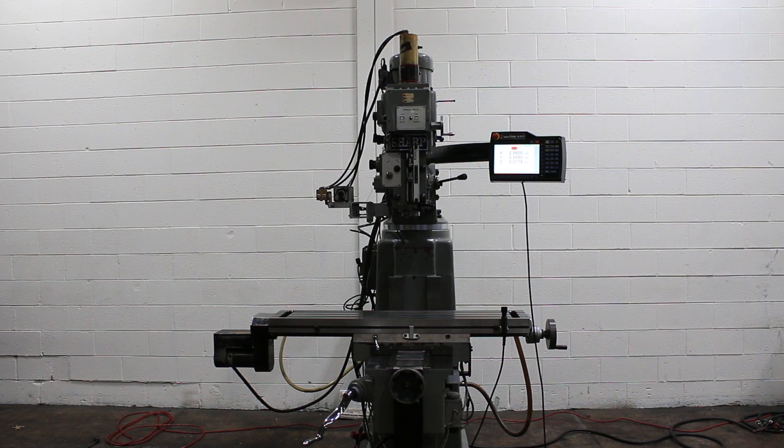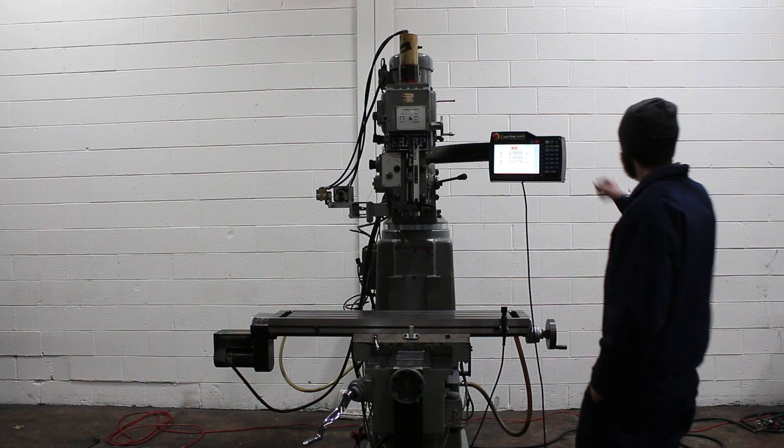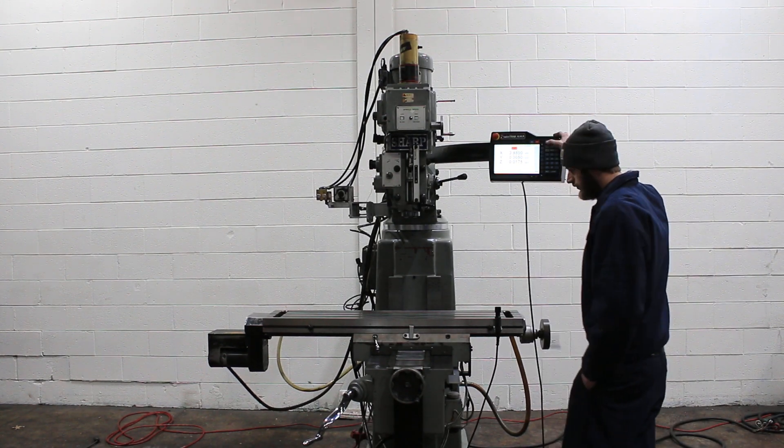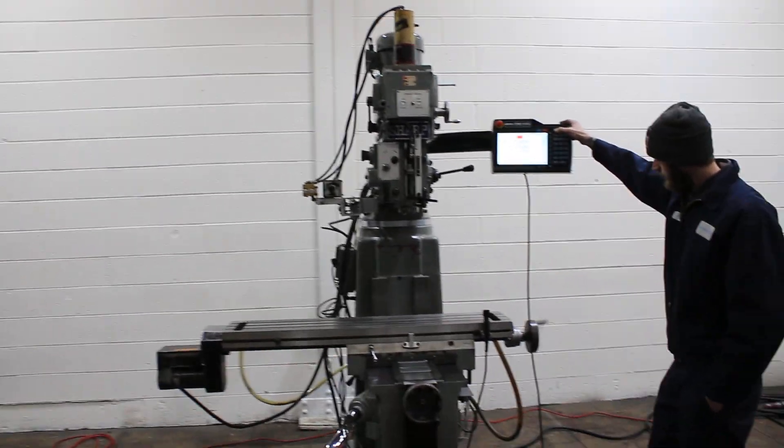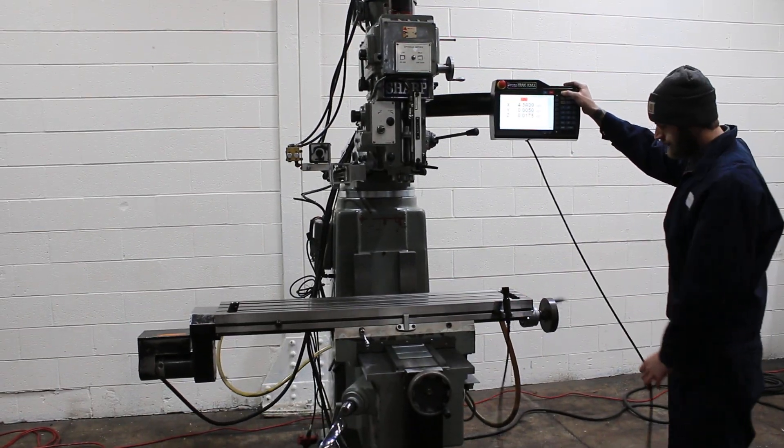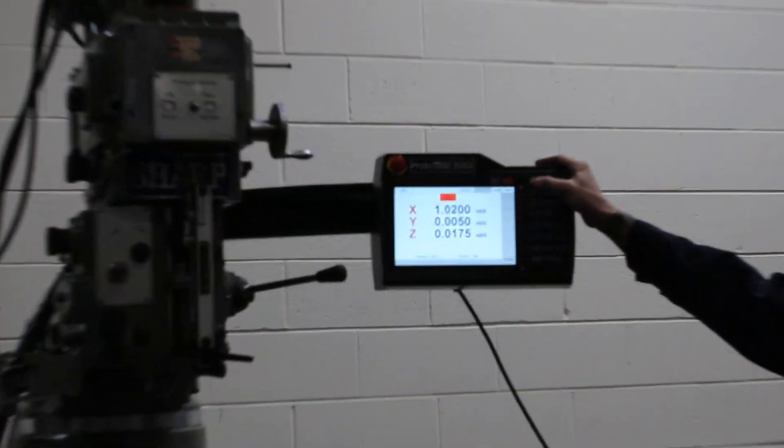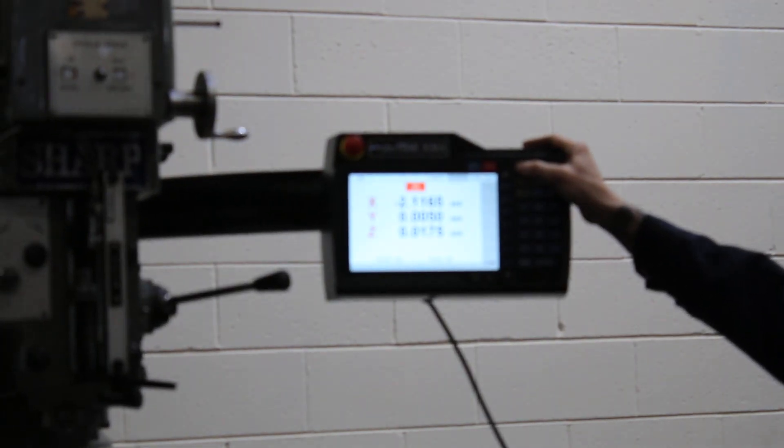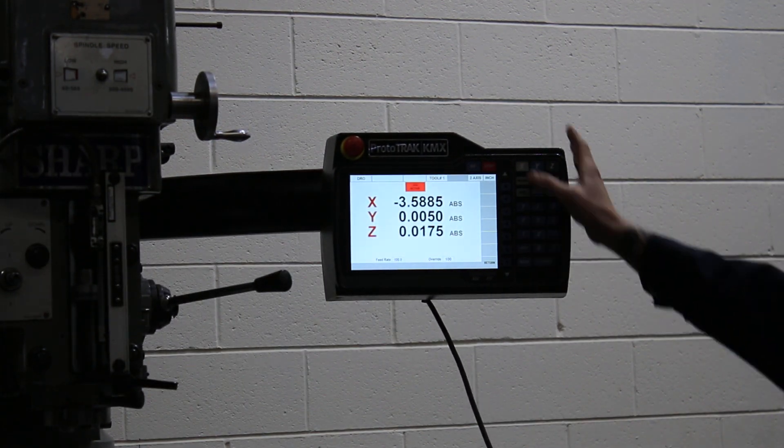We're going to run it for you. We're running the X axis. By the way, you do have scales for double feedback on both the X and the Y. You have 32 inches of X travel.